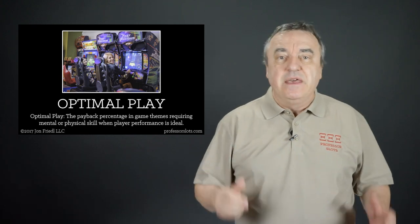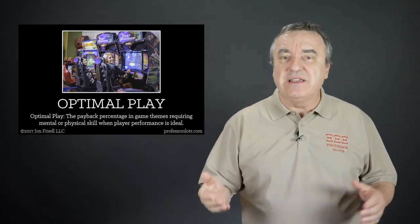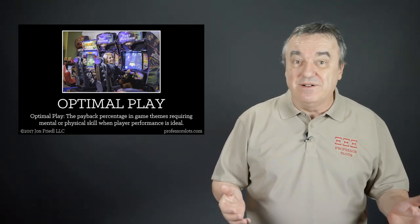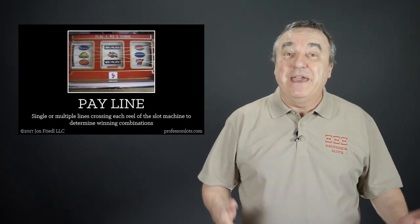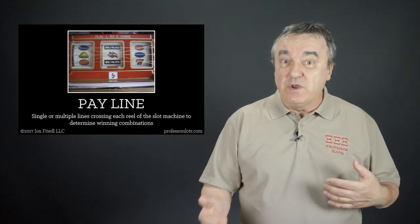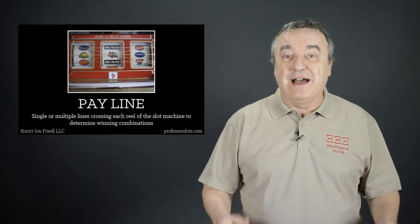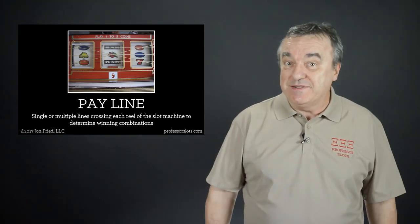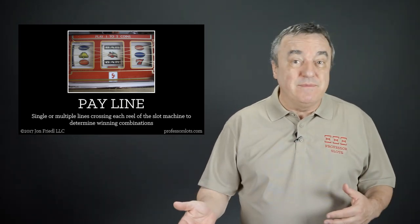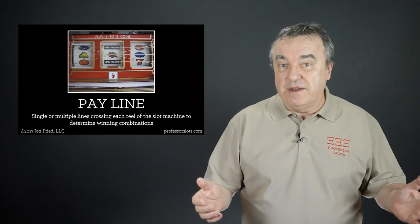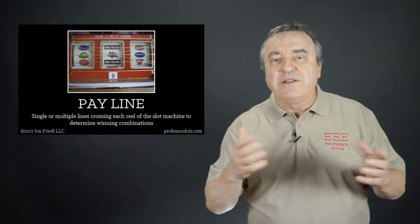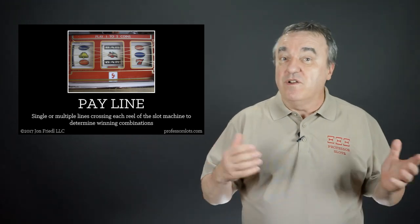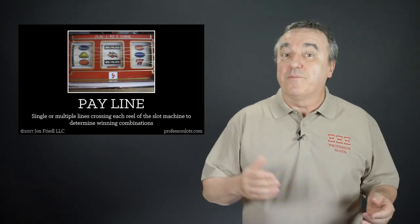Optimal play: the payout percentage in slot machine game themes requiring mental or physical skill when player performance is ideal — that is to say, perfect play. Payline: a line crossing each reel of the slot machine to determine winning combinations. Slot machines may have a single or multiple paylines. It is not uncommon for small-denomination slot machines to have a hundred paylines of many geometrical shapes in addition to a straight line. Video slot machines have a variable number of paylines set prior to playing.